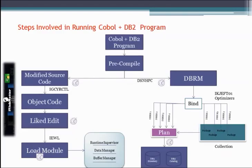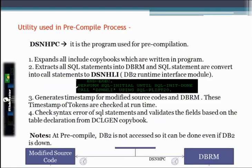This is how a complete COBOL DB2 Program Execution works. Firstly, the COBOL code goes through the pre-compilation process, then through the compilation process, then Link-Edit and a Load Module gets created. On the other hand, the DBRM goes through the bind process and then it's bound to a plan or package and then to a plan. I will be explaining all these stages one by one with the utility used at each stage.